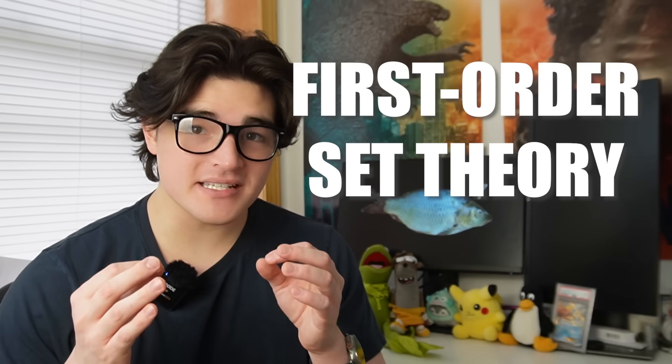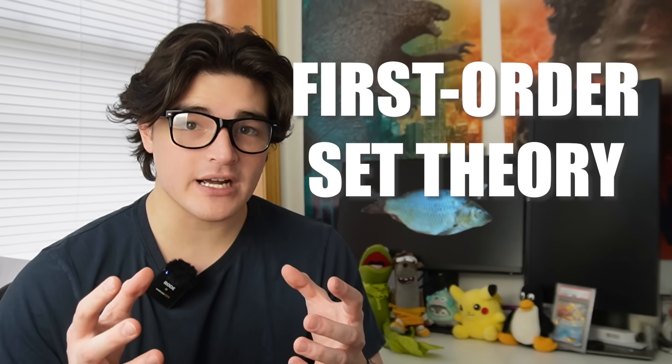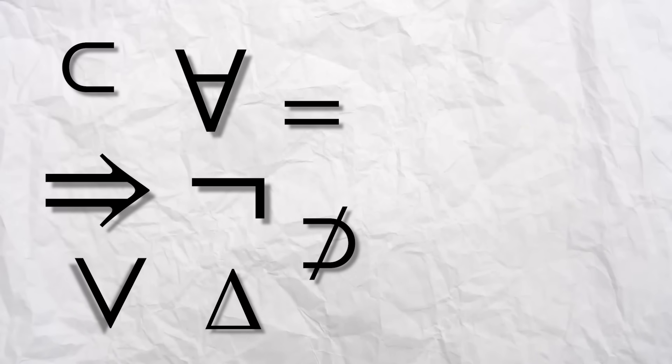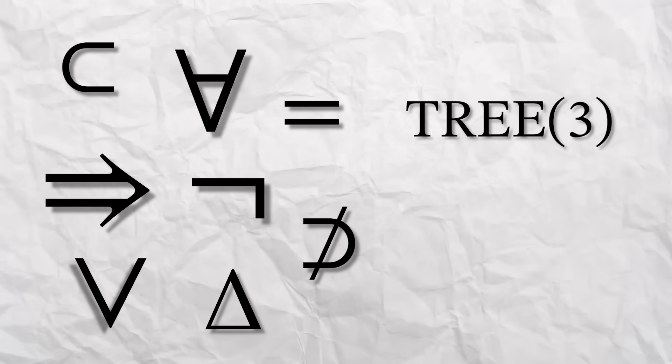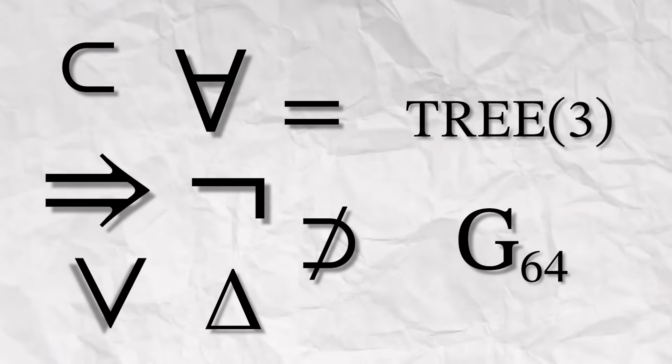First-order set theory is a system that mathematicians use to formally describe objects, or in this case, numbers. The idea is that using these symbols, you can represent numbers like Tree 3 and Graham's number without making a dent in your allocation of symbols.